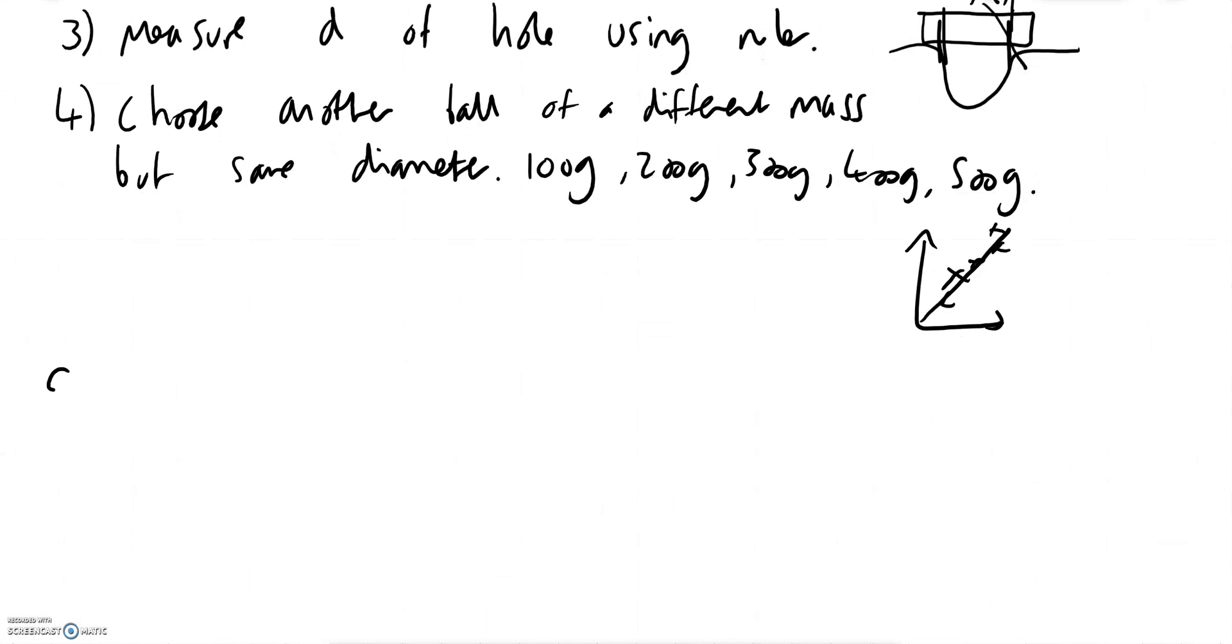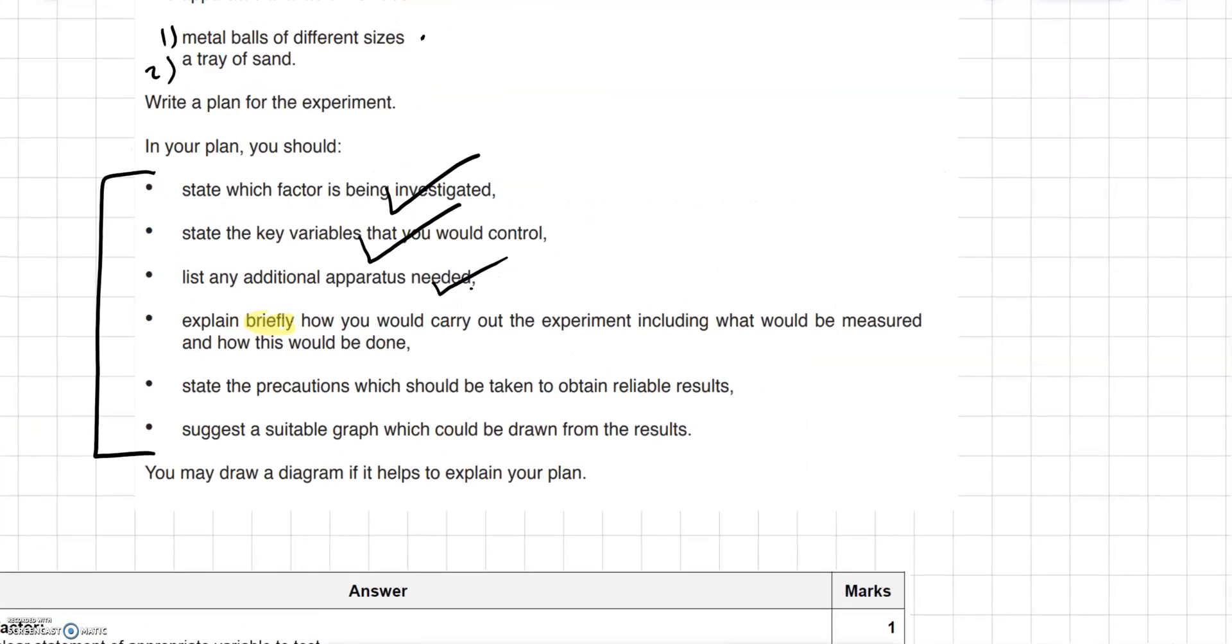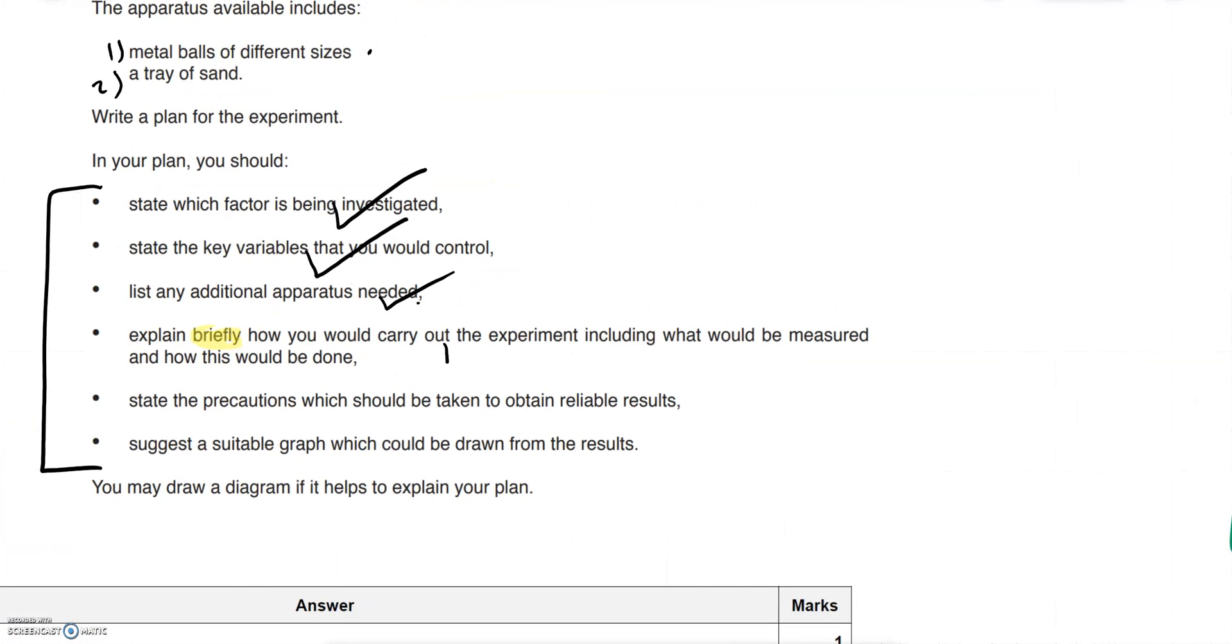And then step five, we're just going to repeat each mass. It's always good to repeat three times plus average.